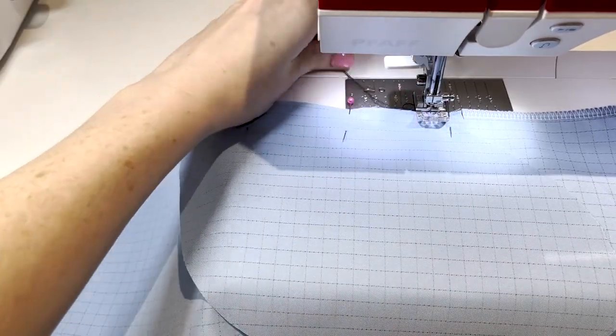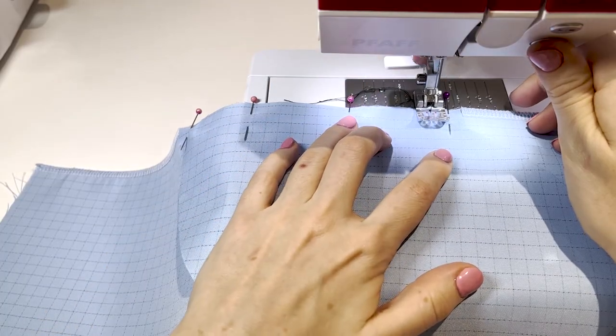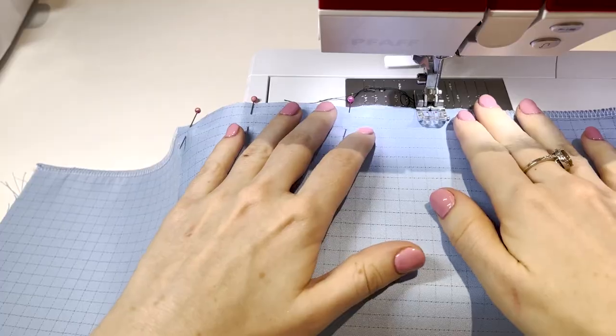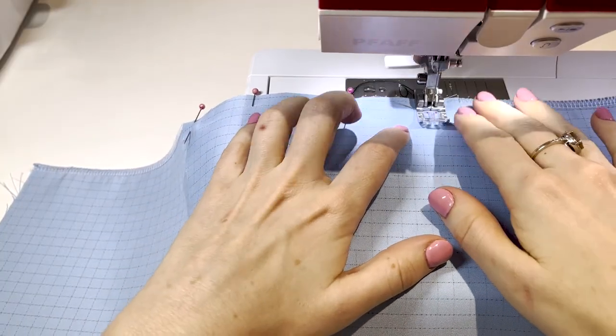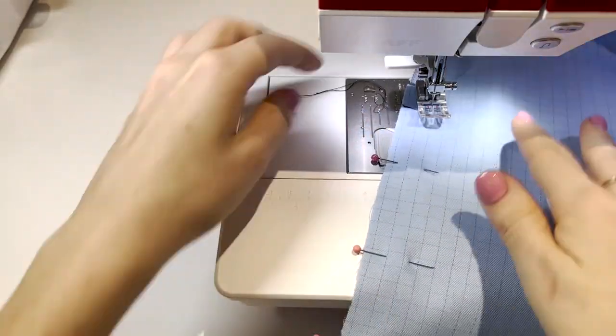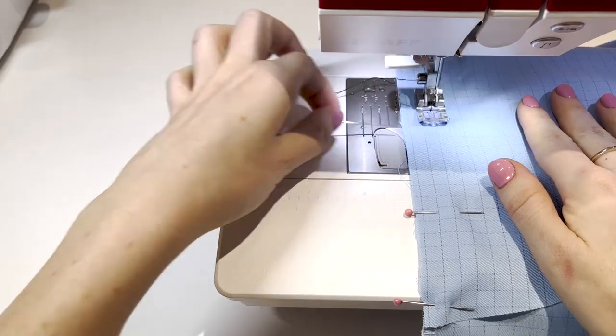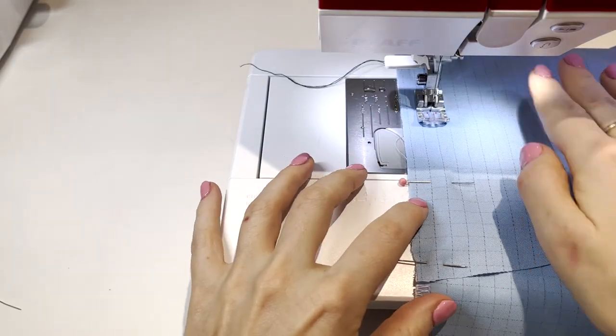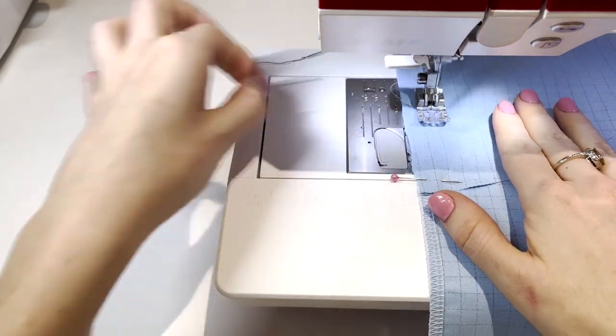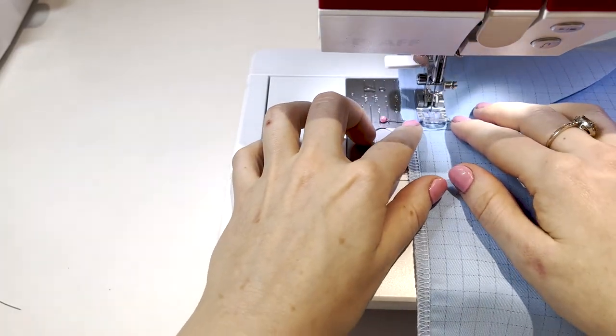Remember to backstitch at the beginning and end of your thread, and not to sew over any needles. When you reach the corner, make sure that you leave your needle down and you pivot the material and then carry on. You'll need to do this at both corners. I recommend you cut all threads as you go in each stage of this tutorial.